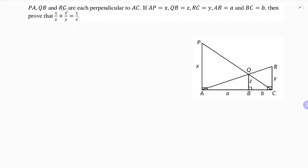PA, QB, and RC are each perpendicular to AC. PA has value x, QB is z, RC is y, AB is a, and BC is b. We need to prove that 1/x + 1/y = 1/z.